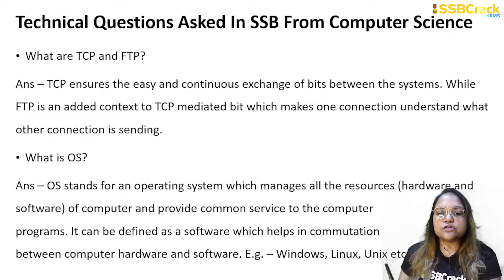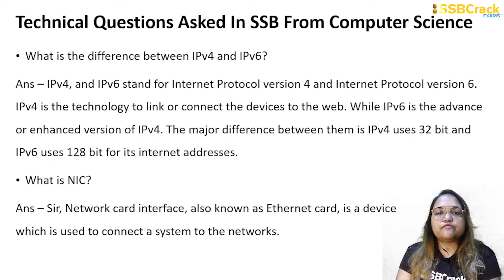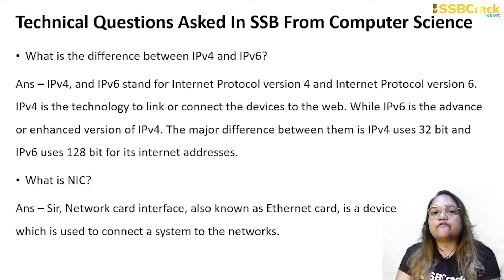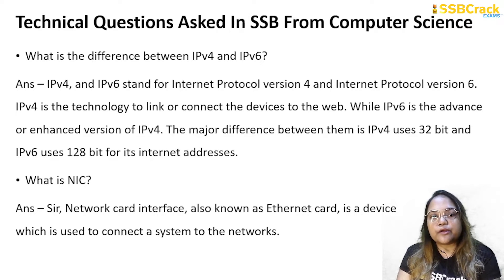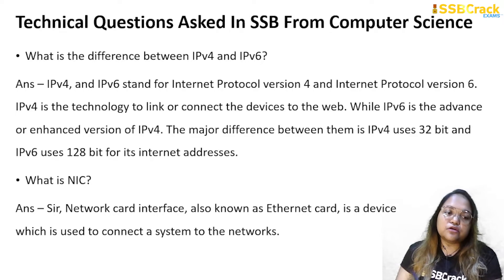An OS can be defined as software which helps in communication between computer hardware and software — for example, Windows, Linux, Unix, etc. What is the difference between IPv4 and IPv6? IPv4 and IPv6 stand for Internet Protocol Version 4 and Version 6 respectively. IPv4 is the technology to connect devices to the web, while IPv6 is the advanced version of IPv4. The major difference is that IPv4 uses 32 bits and IPv6 uses 128 bits for its Internet addresses. What is NIC? Network Interface Card, also known as Ethernet Card, is a device used to connect a system to a network.